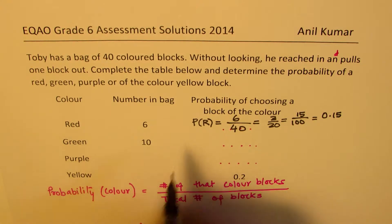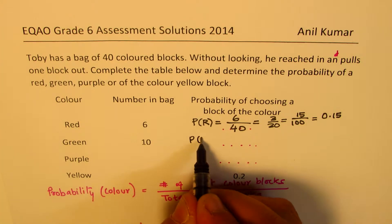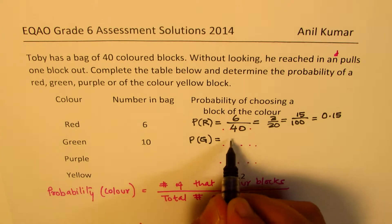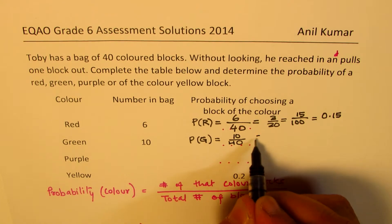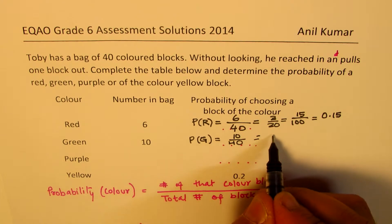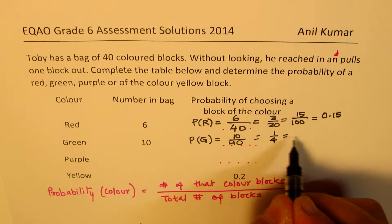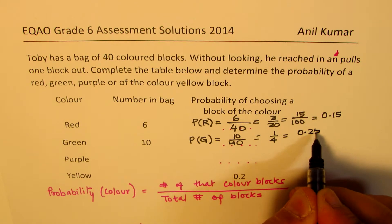For green, the probability is 10 out of 40. So 10 out of 40 is 1 over 4, and a quarter means 0.25.